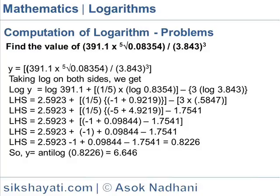Let us assume y equals the expression: 391.1 times the 5th root of 0.08354 divided by 3.843 to the power of 3. Taking log on both sides, we get log y equals log 391.1 plus one-fifth of log 0.08354 minus 3 times log 3.843.